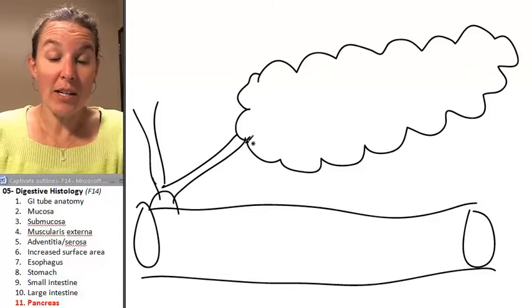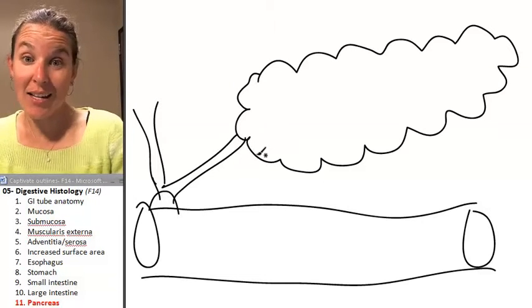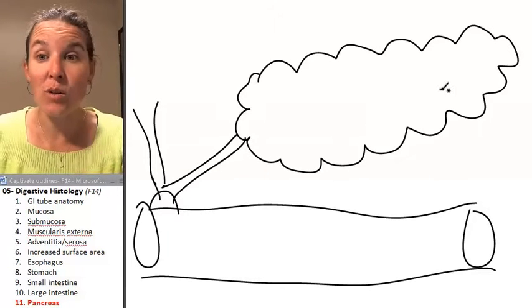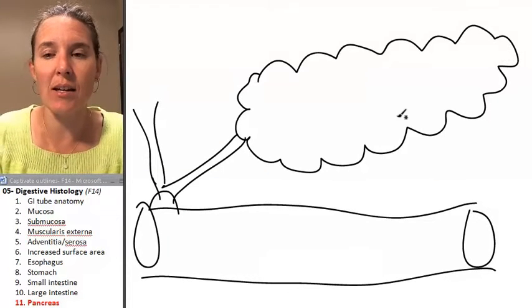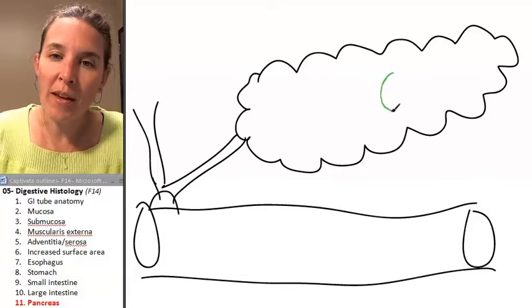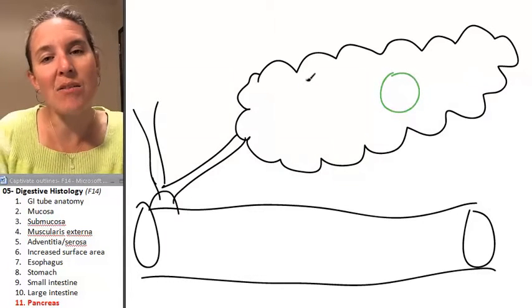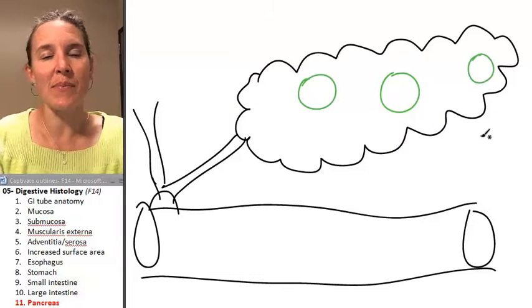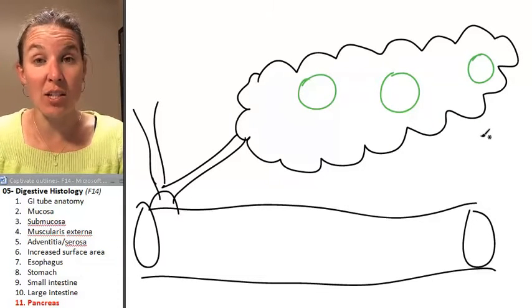Because the pancreas has exocrine tissue and endocrine tissue, there are two different structures that we're going to see in here. For one thing, we're going to see these kind of round islands.